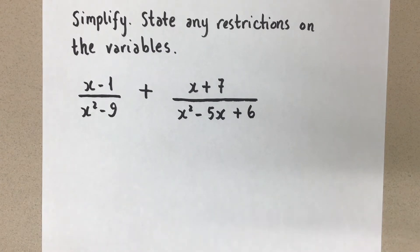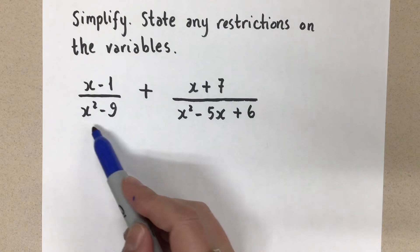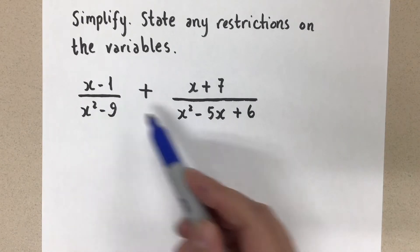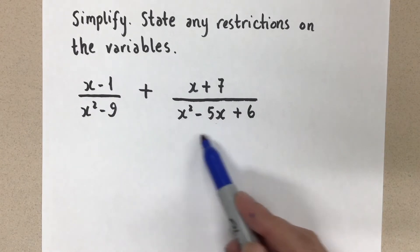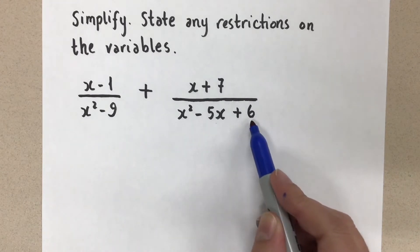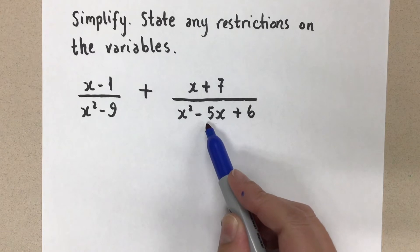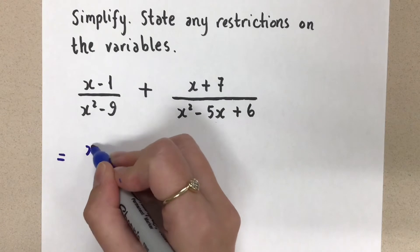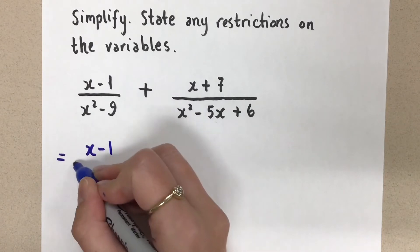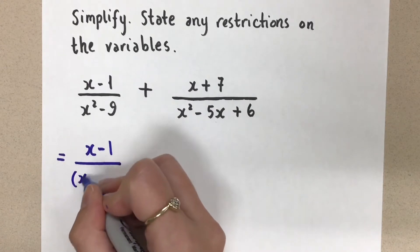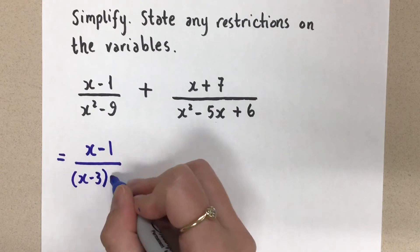So let's first look at this denominator. That's a difference of squares, so I can factor that using the three squared. And this is a simple trinomial with a product of six and a sum of negative five. So I'm just going to rewrite this now. If you need extra review on factoring, please go and look at my factoring videos, and then come back to this video after.